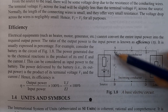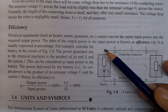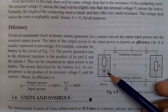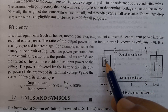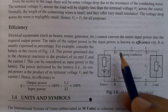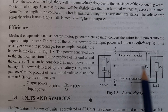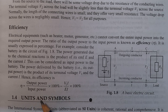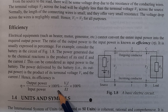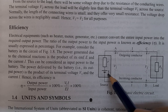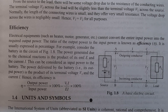The output power is the product of its terminal voltage V1 and current I, that is V1 × I. Efficiency equals the ratio of output power to input power, multiplied by 100 percent. That is: efficiency = (V1 × I) / (E × I) × 100 percent. Thank you so much.